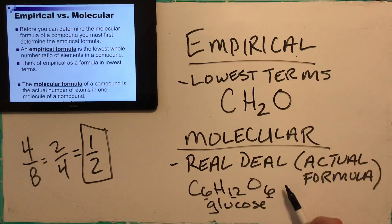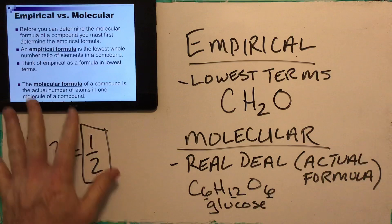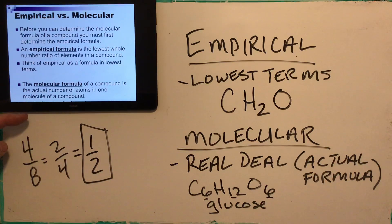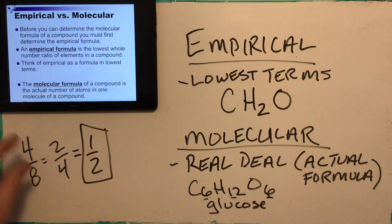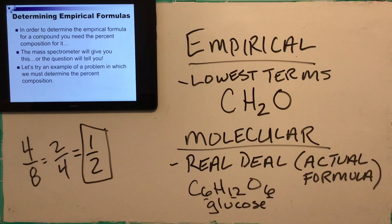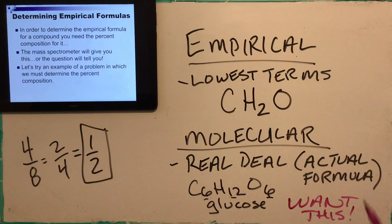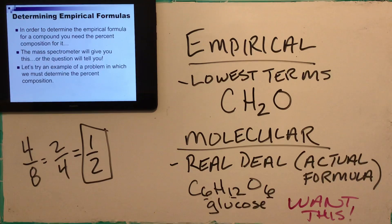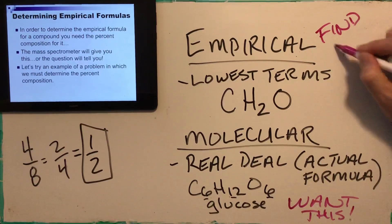We will always have to find the empirical formula first before we can determine the molecular formula. The molecular formula is the real thing — what it really looks like when you run into it at the movies or the mall or wherever. We want this, right? We don't want just the lowest terms. If my cure for cancer has a formula, I want the real formula — I want to make up the real chemical that's going to go in there and fight the cancer. So I want the molecular formula, but I have to find the empirical formula first.